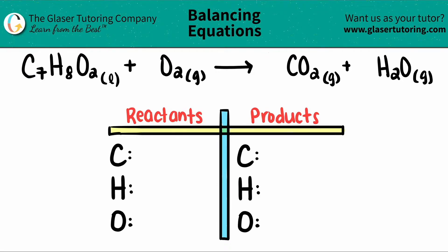For carbon, I see that there's a seven here, so I have seven carbons. Hydrogens, I see that there's an eight here, so that means I have eight hydrogens. Now, for the oxygen, just be careful. I have oxygen here and oxygen here on my reactant side, so you have to add the two numbers. I have two oxygens from here plus two oxygens from here. Two plus two is four, so I have four total oxygen.